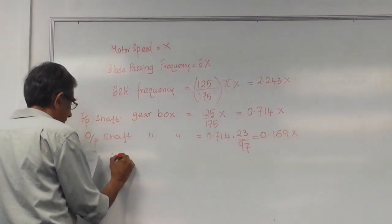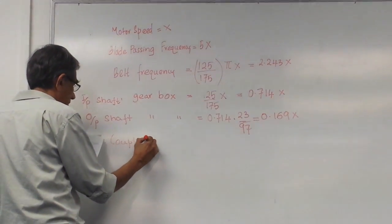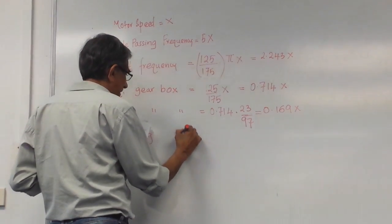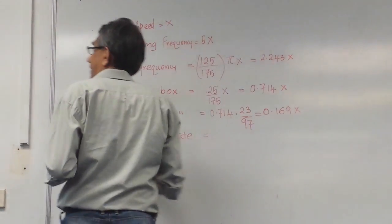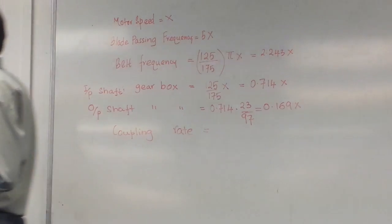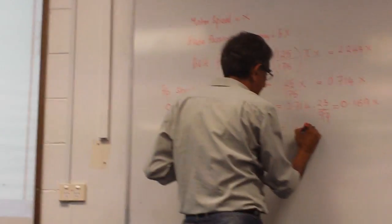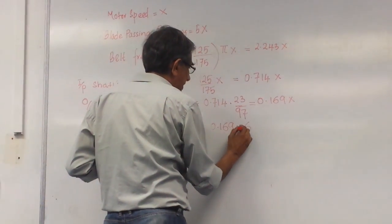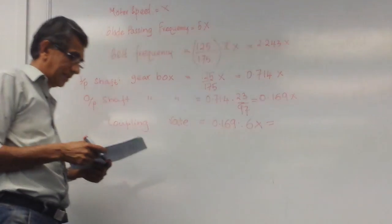The coupling frequency. Maybe for another example. The coupling frequency is the shaft speed times 6. It is 0.169 times 6. That's the coupling frequency — point x.